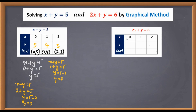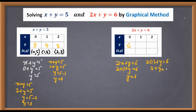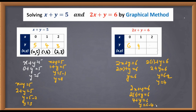Now we substitute x values into the second equation 2x plus y equals 6. When x is 0: 2×0 plus y equals 6, so y is 6. When x is 1: 2 plus y equals 6, so y is 4. When x is 2: 4 plus y equals 6, so y is 2. The three points for the second equation are (0, 6), (1, 4), and (2, 2).